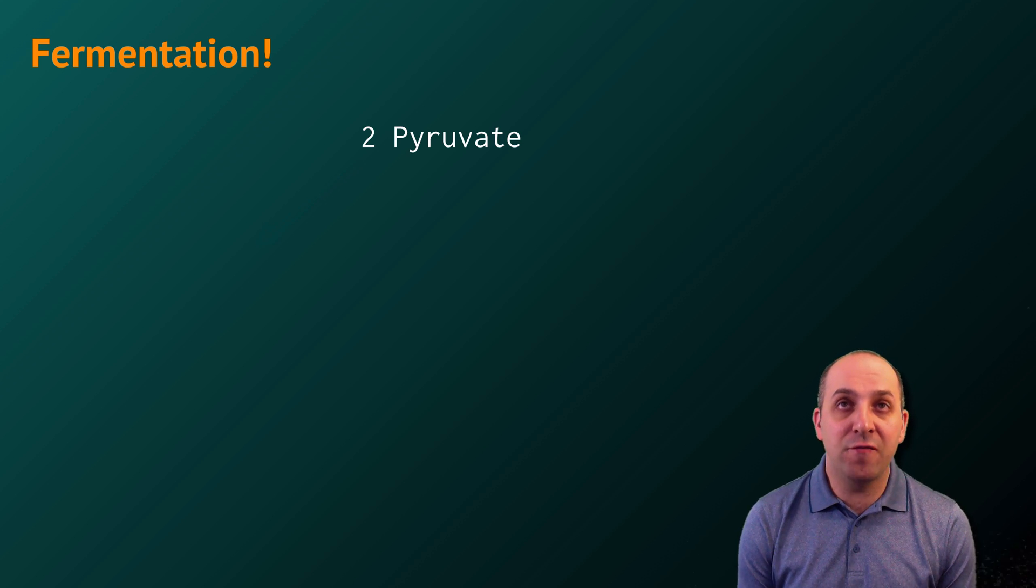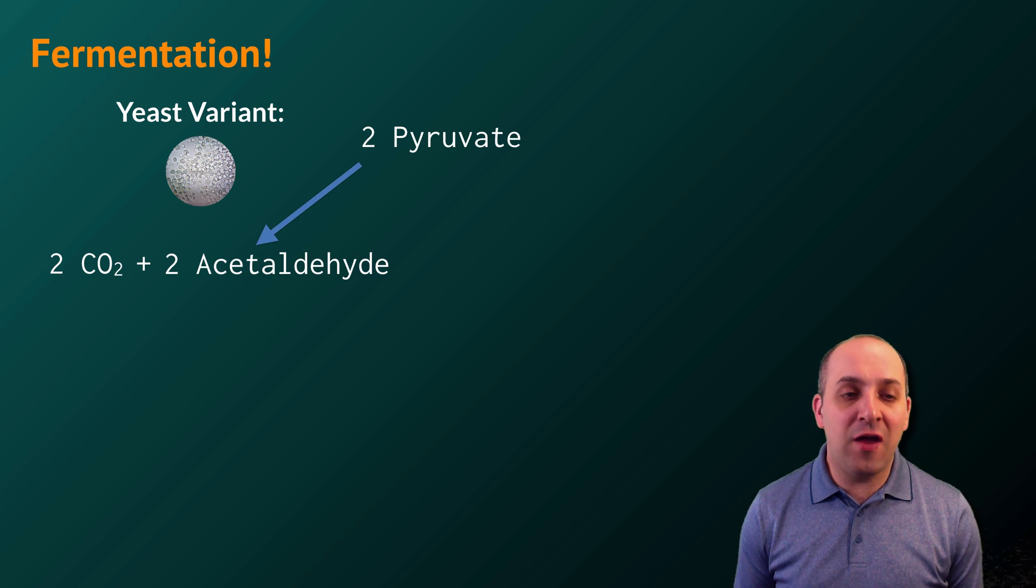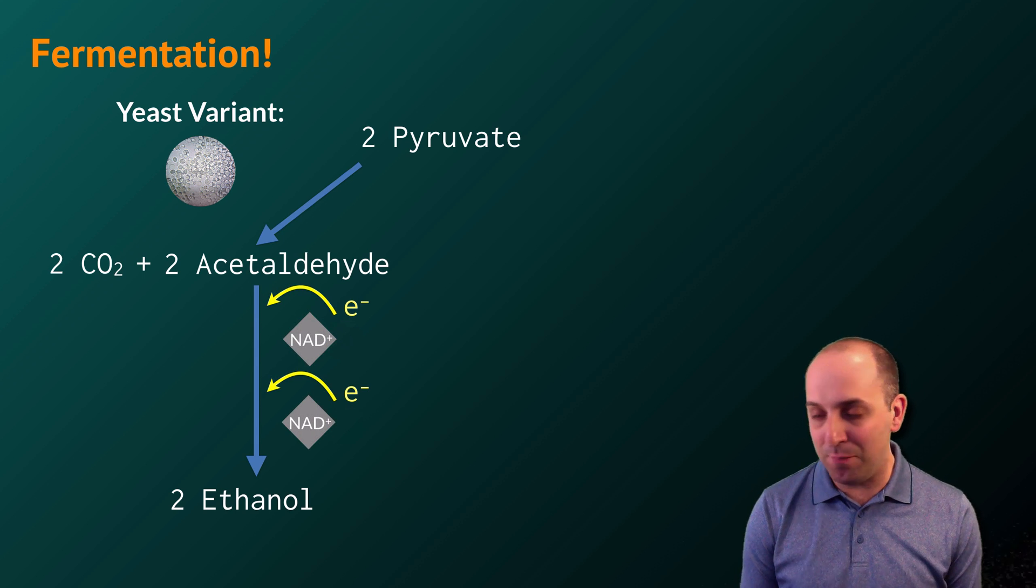The specifics of the fermentation pathway are going to depend upon the organism that's carrying it out. In yeast, the pyruvate is initially converted into two carbon dioxide and two acetaldehyde molecules, with the acetaldehyde molecules serving as the substrate for the oxidation of the NADHs back into NAD plus.